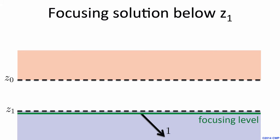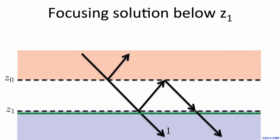Let's see how we can create such a focusing solution — it's not very difficult for this problem. First I send a wave in from above; it propagates to my focusing level and continues downward. But this down-going wave is reflected upward at the reflectors and bounces back downward again. This is not a focusing solution, because the focusing solution requires only one down-going wave of unit strength below my focusing level, and here we have two. So we need to kill these extra waves.